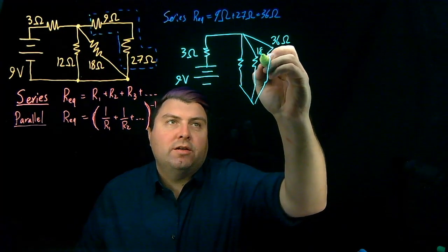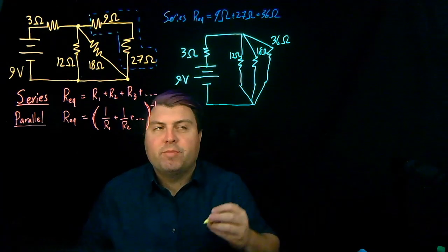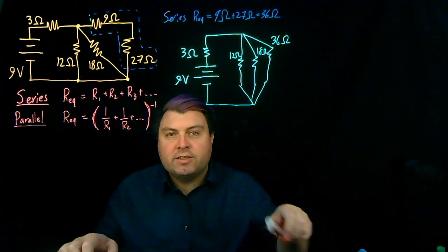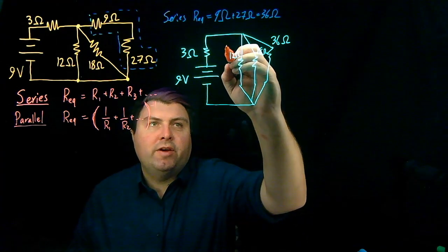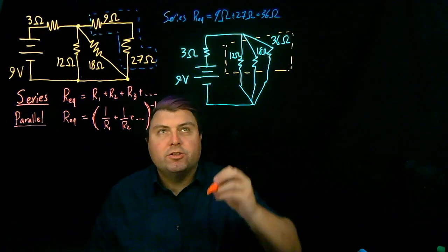And so we now have a 36 ohm, we have an 18 ohm, 12 ohm, and coming back here. And so the next thing that we can see is our 12, 18, and 36 are in parallel with each other.